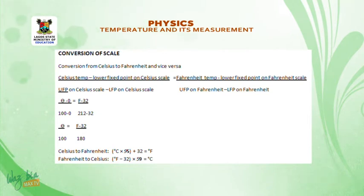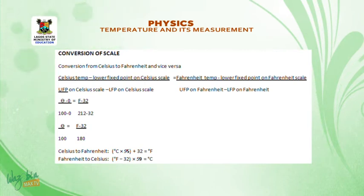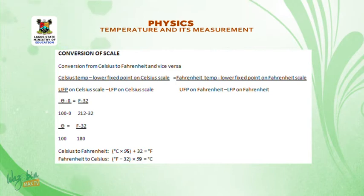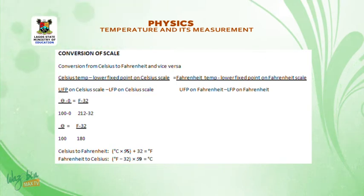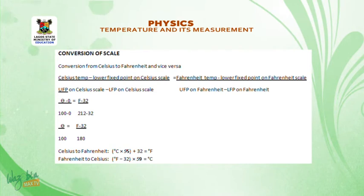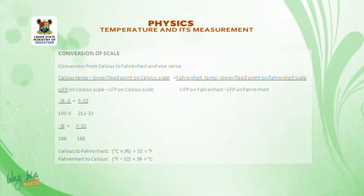To convert Celsius to Fahrenheit: F = (C × 9/5) + 32. To convert Fahrenheit to Celsius: C = (F − 32) × 5/9. The simplest formula to remember is: θ/100 = (F − 32)/180, where θ is the temperature in Celsius and F is the temperature in Fahrenheit.